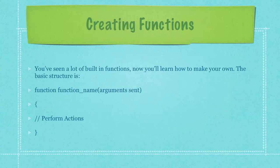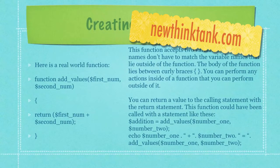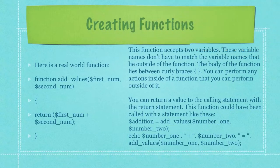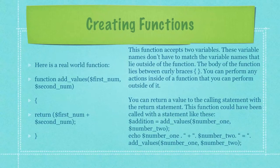The basic structure follows just like this. You first have the keyword function followed by whatever the function's name is, any arguments that you want passed to that function, and then between curly braces you would perform whatever actions you'd like. This function accepts two variables. These variable names don't have to match the variable names that lie outside of the function. You can return a value to the calling statement with the return statement. This function could have been called with a statement like the example on the right side of the screen, where I'm assigning the value returned from the function addValues to the variable addition by passing two variables to it — number 1 and number 2.